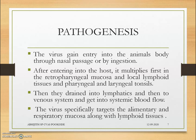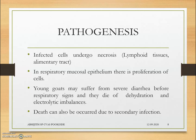In pathogenesis, the virus enters the animal body through the nasal passage or by ingestion. After multiplication in the upper respiratory tract, it moves to the retropharyngeal mucosa, local lymphoid tissues, pharyngeal and laryngeal lymph nodes, and tonsils. It then drains into the lymphatics and venous system, entering systemic blood flow. The virus specifically targets the alimentary canal, respiratory mucosa, and lymphoid tissues. Infected lymphoid cells undergo necrosis, leading to lymphopenia.